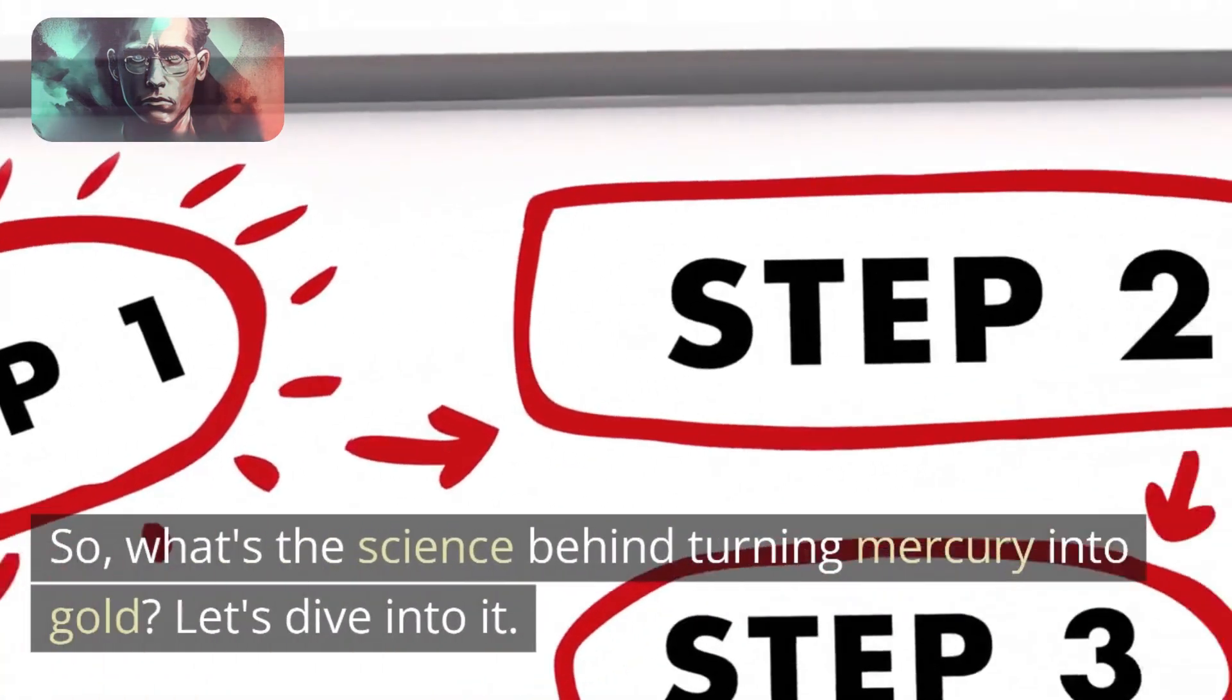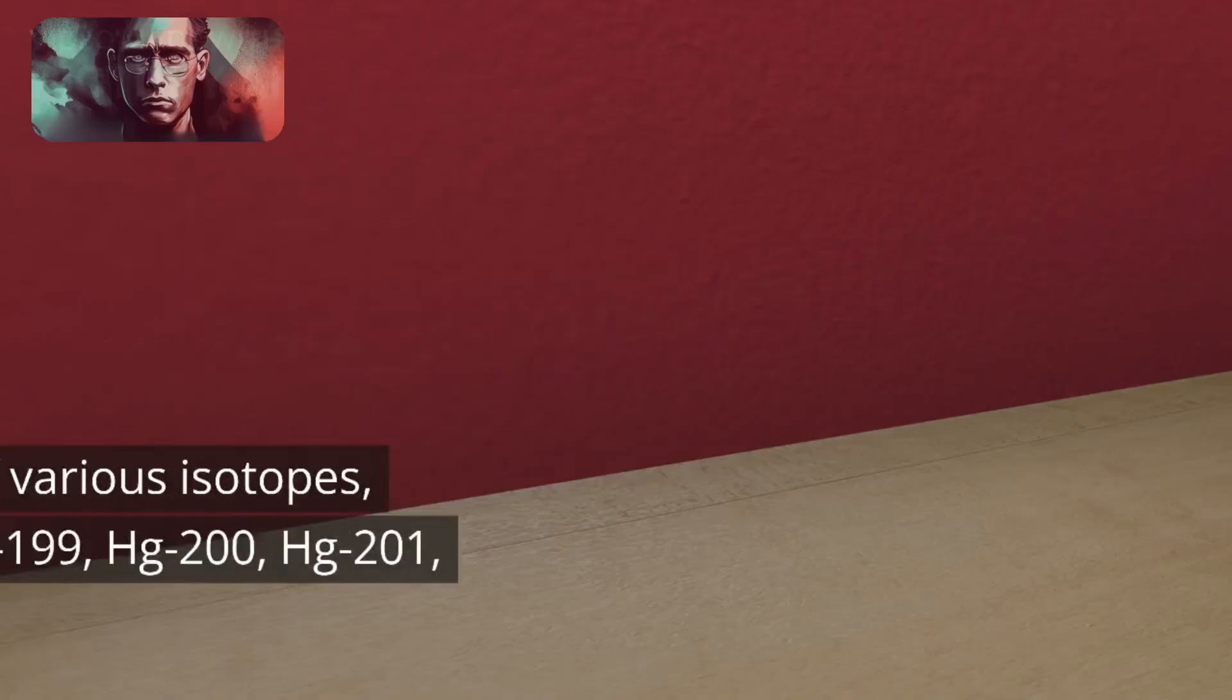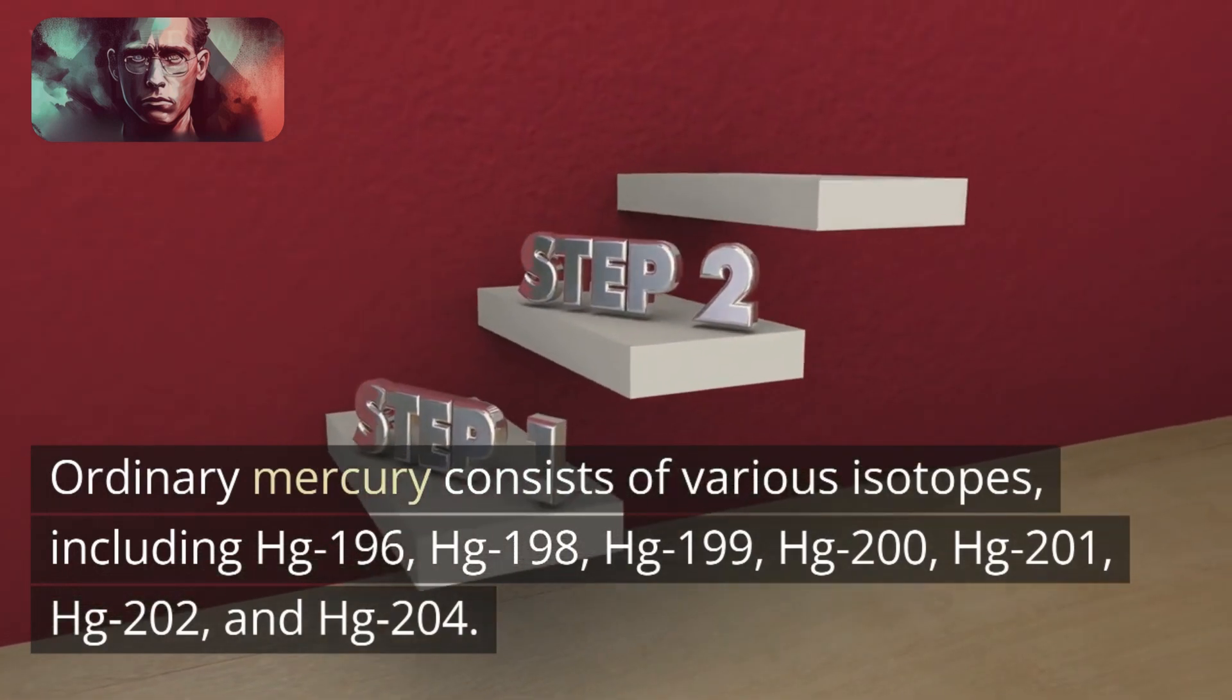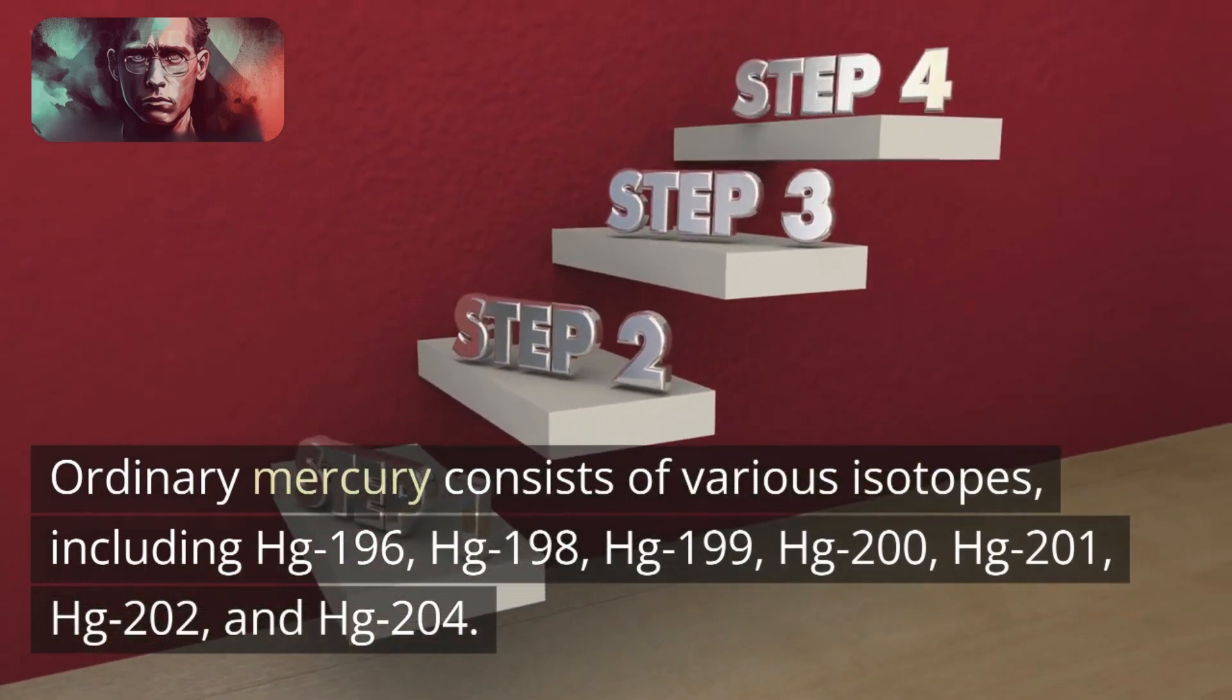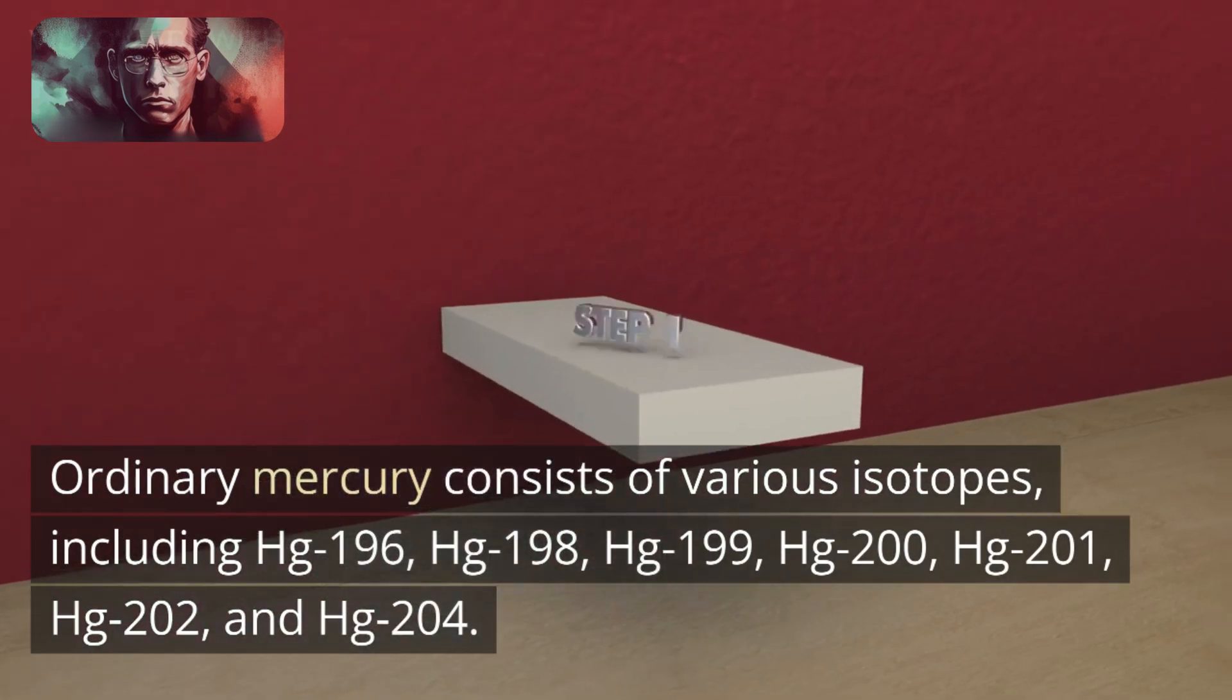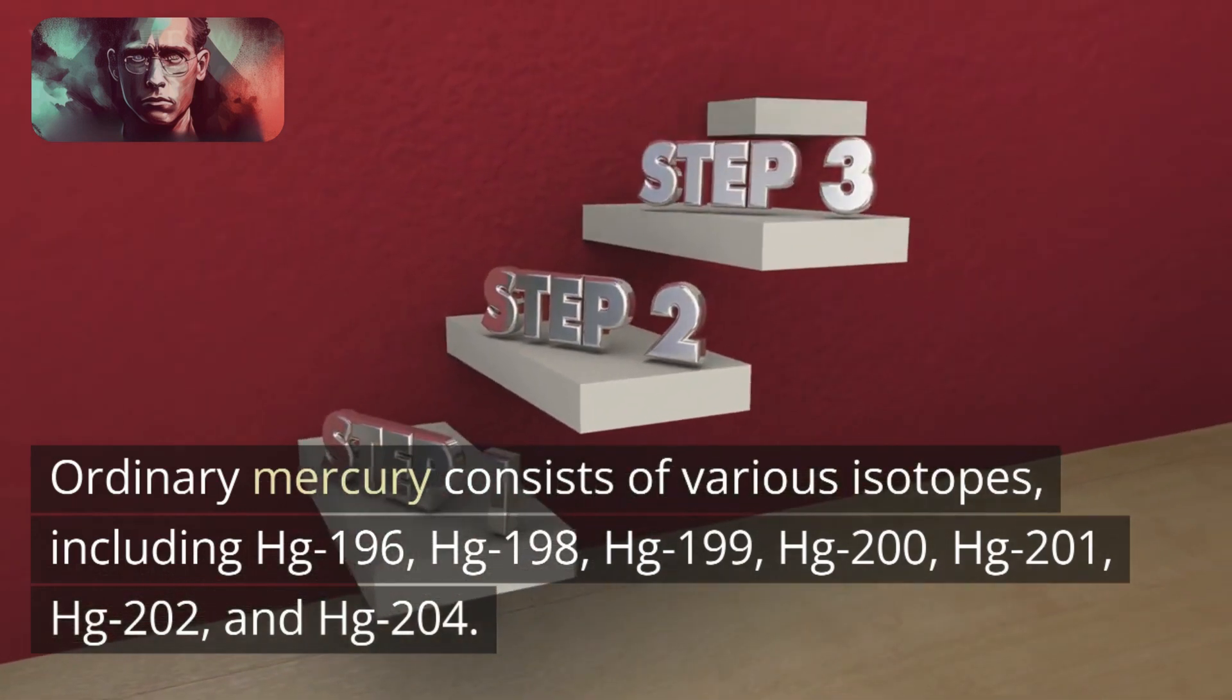So, what's the science behind turning mercury into gold? Let's dive into it. Ordinary mercury consists of various isotopes, including HG-196, HG-198, HG-199, HG-200, HG-201, HG-202, and HG-204.